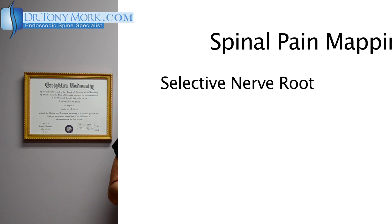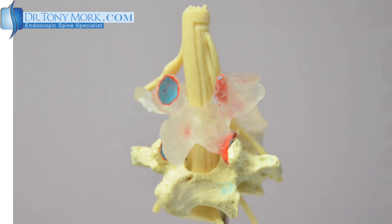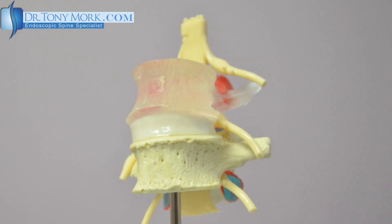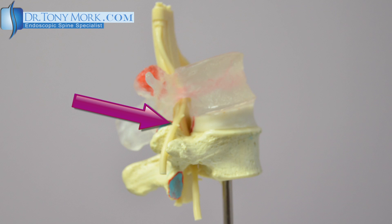The first type of spinal pain mapping technique is a selective nerve block. In this particular case, we can see that a nerve — in this case an exiting nerve root in the lumbar spine — can be injected by putting a little bit of Novocaine where the purple arrow is. And if this was responsible for removing your pain, we could attribute the pain as coming from this nerve, which is getting pinched or caught somewhere.